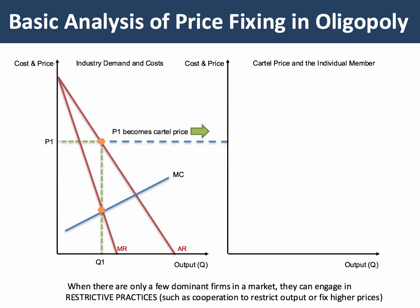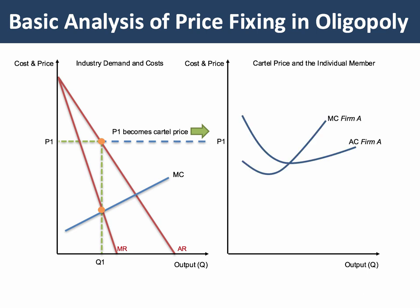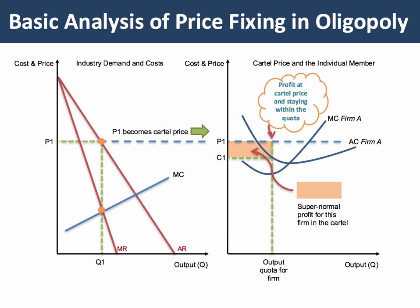Each cartel member — this is Firm A on the right hand side — is effectively a price taker. There are Firm A's costs shown. Q1 will be the industry supply, and they're going to fix the supply at Q1. The cartel may then choose to allocate an output quota for each firm. So Firm A, being in the cartel, must price at P1 and is told: here's your quota — produce 50,000 tonnes of cement, and stick to it. At that quota, we can see Firm A's cost and price, and this firm can make a supernormal profit by charging the cartel price.